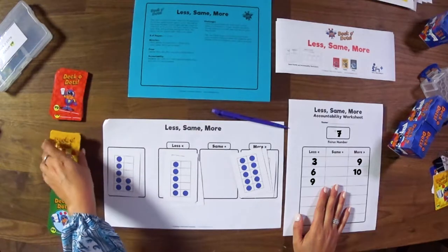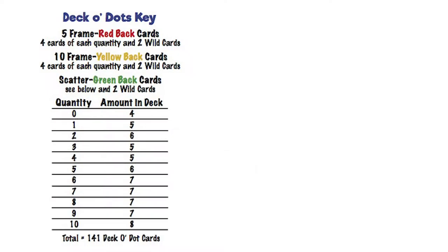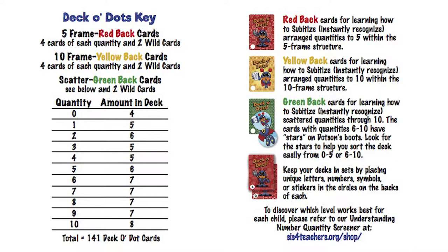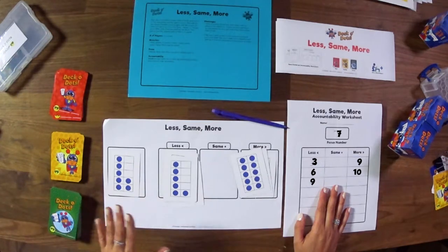Again, this game could be made a lot easier if we made it with the five frame. This is a really great game to do for students that are working on the scatter. Whether you want to do Dotson with the stars on his sneakers or the stars off, you could also control how you're doing that.